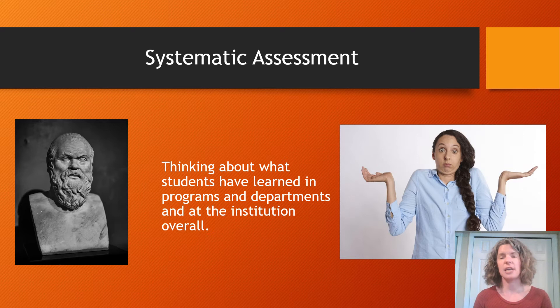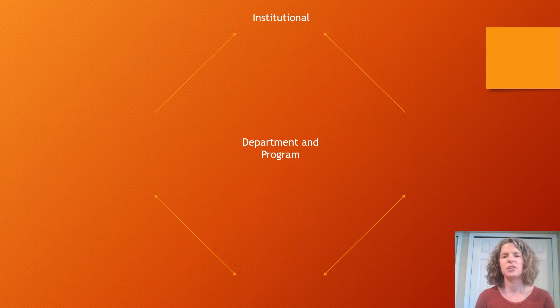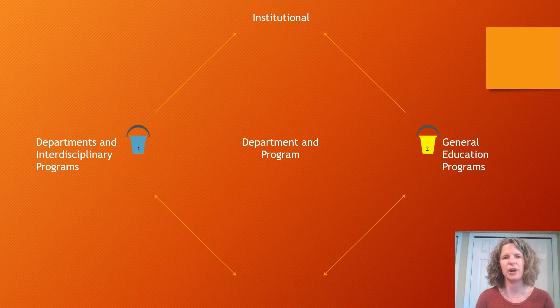What I want to try and do today is help you understand both types of assessment together. At Gustavus, we think of assessment on three levels: the institutional level, the department and program level — which we think of in two buckets: departments and interdisciplinary programs, and general education — and assessment at the course level. It kind of makes a diamond.